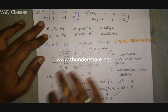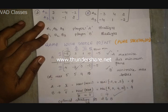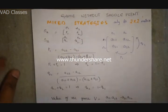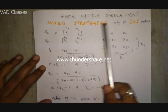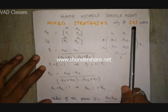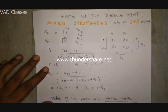This is a simple method. Depending on the marks, you can use just this shortcut. In case the game does not have a saddle point, this basic technique is used only for a two-by-two matrix — two rows and two columns.